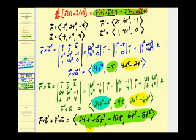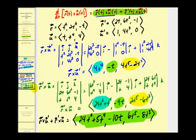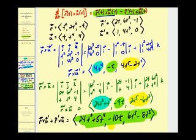The right side of the equation matches what we found earlier — the derivative of r cross u. Here's the derivative of r crossed with u, and here's the sum of r crossed with u prime and r prime crossed with u. It's a perfect match. So it's not a proof, but we have verified that property five is valid. That'll do it for this video.